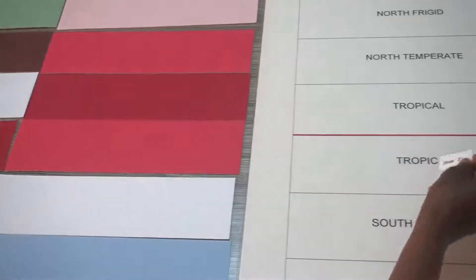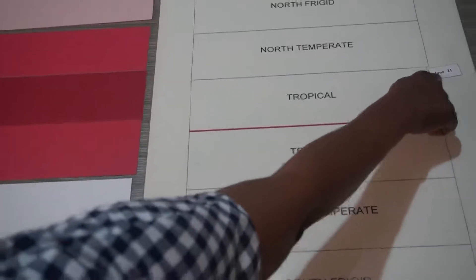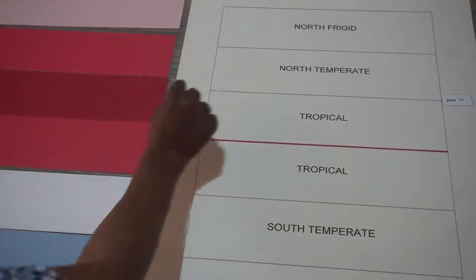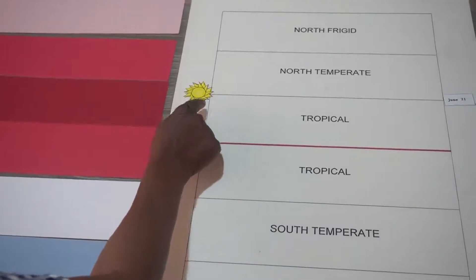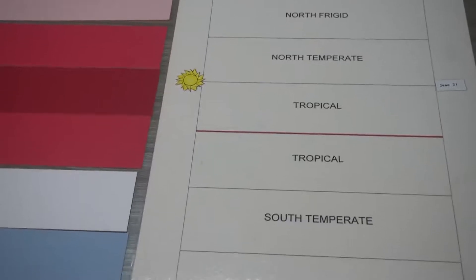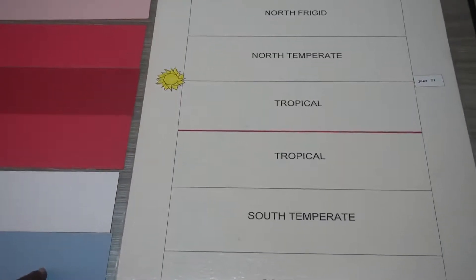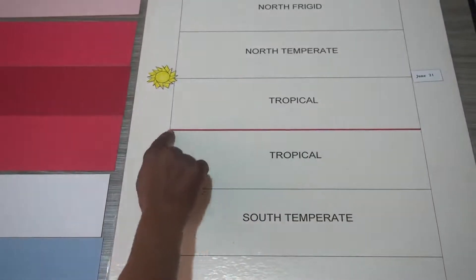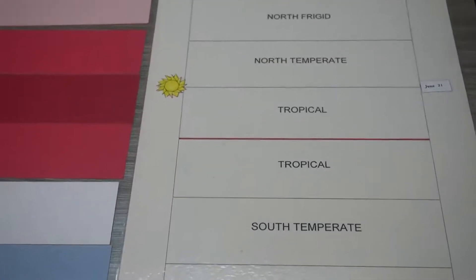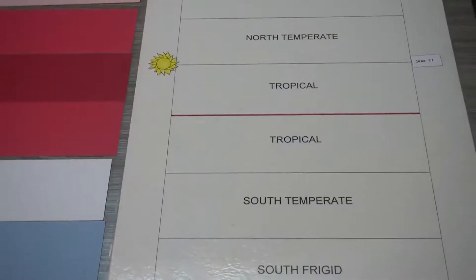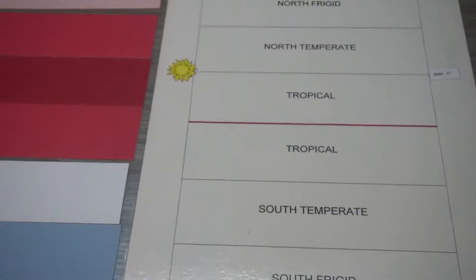We know that on June 21st the perpendicular rays are at the Tropic of Cancer, so that perpendicular is here. Now we live in the north — we live at the north torrid zone, or north tropical zone. So on June 21st...